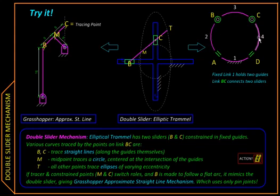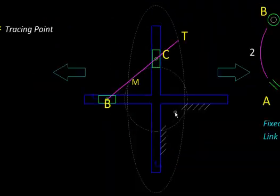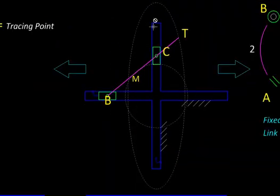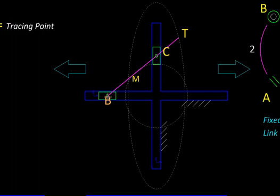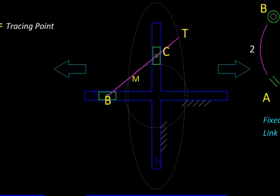Because it has two sliders, it is called a double slider. Here is one of its applications: the blue link with a cross slot is our fixed link, the two green sliders move within it, and connecting them is the purple link with two hinges at B and C. Midway between the hinges is point M, and on the extension of BC is a tracing point T. Let us see their paths as we move this mechanism.